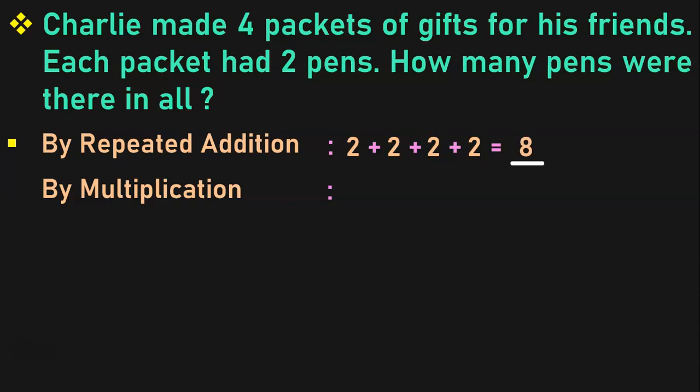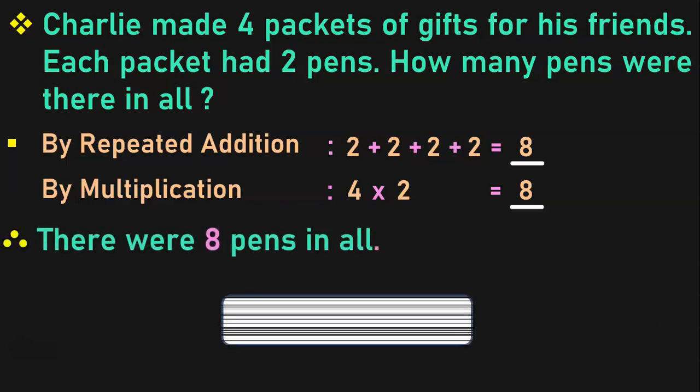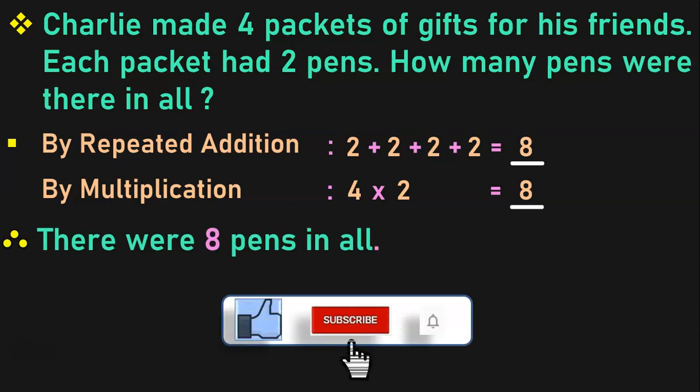So this is the repeated addition method. How do you represent the same in the form of multiplication? We are doing 4 times 2, and we get the answer to be 8. Representing that in the form of multiplication, it will be 4 into 2 is equal to 8. We know that 4 represents the number of groups and 2 represents the number in each group. So, 4 groups of 2 pens each — 4 into 2 is equal to 8. Therefore, there were 8 pens in all.